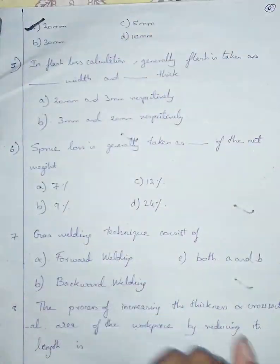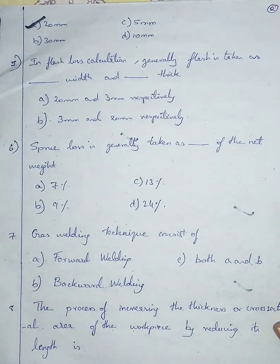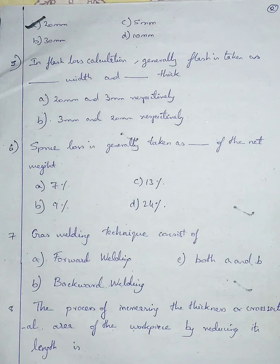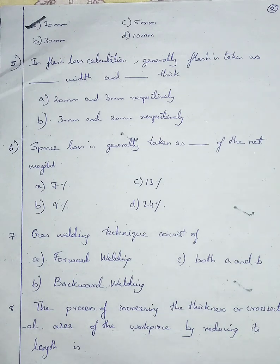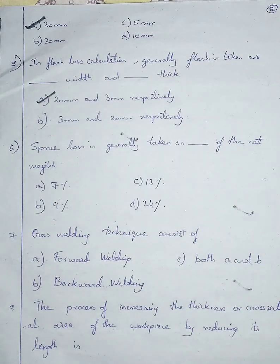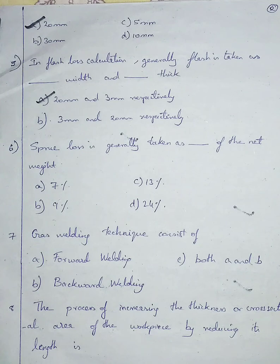Question number five: in flash loss calculation, flash is generally taken as dash width and dash thickness. The flash takes an additional length of 20 mm and thickness of 3 mm. So I'm going with option A, 20 mm and 3 mm respectively.